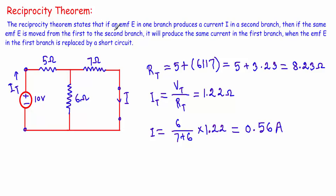The Reciprocity Theorem states that if an EMF in one branch produces a current I in the second branch — for example, let's say I have a voltage source or EMF of 10 volts acting in this branch and it produces a current I in this branch — then if the same EMF is moved from the first to the second branch, it will produce the same current in the first branch, when the original position is replaced by a short circuit.